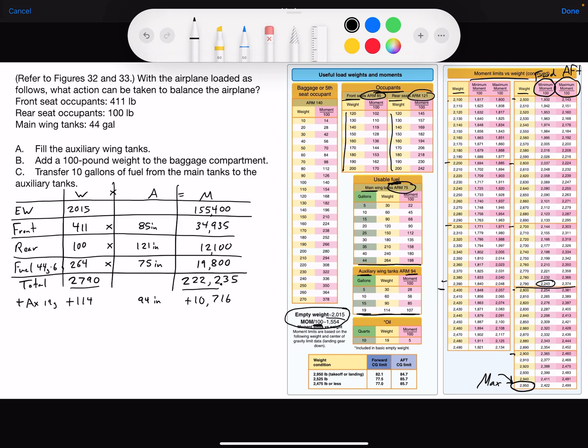And multiply it by the arm of 94 to give us a moment of 10,716. And that would result in a weight of 2,904 pounds and a moment of 232,951.